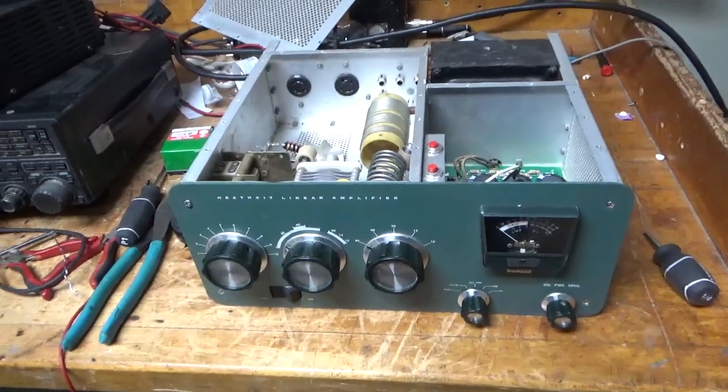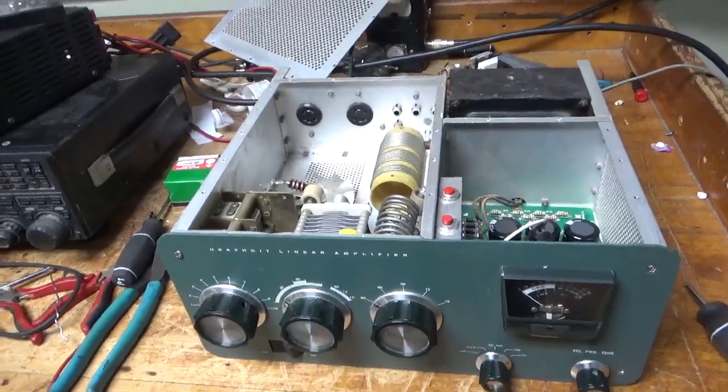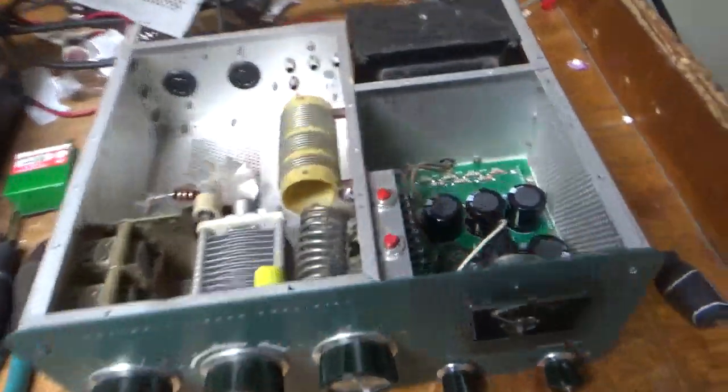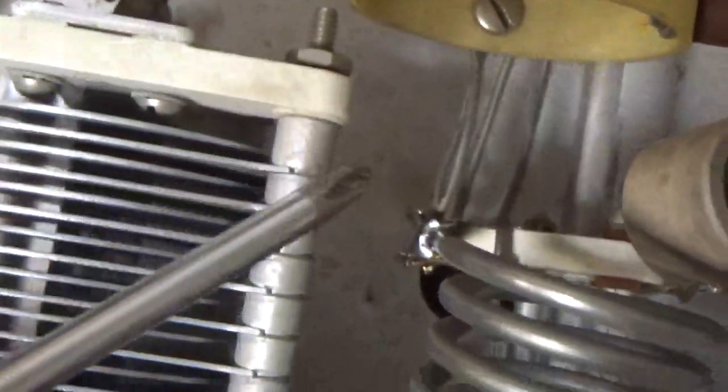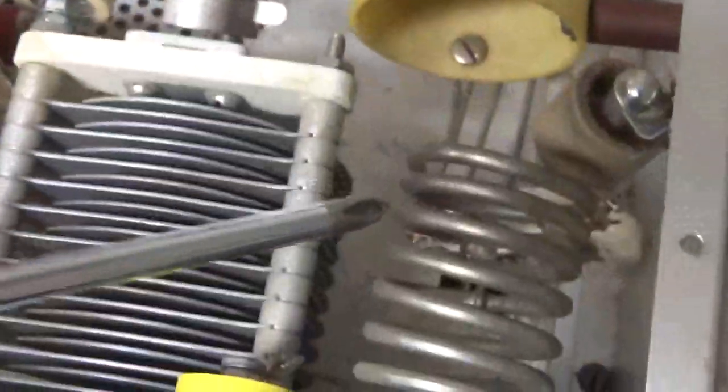Okay, so I'm back with the completed amplifier. I'm going to go over everything I did to this thing. So at the very end, I noticed that this solder connection had failed the tubing, so I went ahead and re-soldered it. That's for this coil right here.